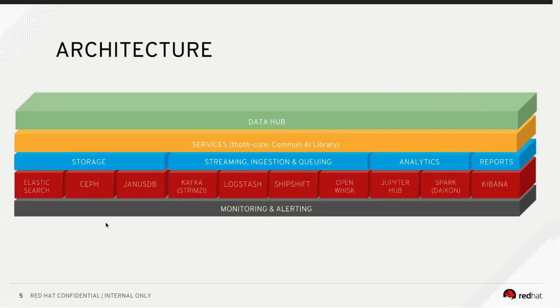All of that rolls into our service layer, where we have something called a common AI library. As data scientists on our team and other teams create analytical models, there's a lifecycle where they play around with things and then publish into the execution engine. We're building out an AI library that allows data scientists to take those models and put them in a place where other teams can leverage them — deploy them, pass their own data through, and get results. We'll be publishing that AI library pretty soon.